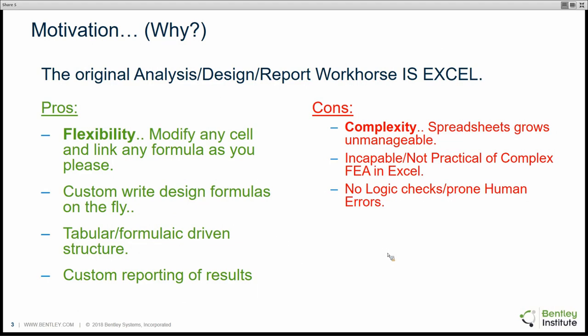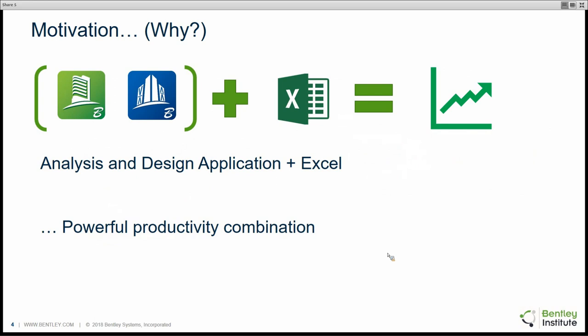More pros: it's easy to do custom design formulas on the fly — you're not stuck with a black box. As engineers, we like tabular, formula-driven structure, and you can do custom reporting of results as you see fit. On the cons side: it's not feasible to do complex FEA in Excel on its own, there are no logic checks, and it can be prone to human errors. Modern engineering applications like RAM Structure System and STAAD Pro have mostly addressed those cons.